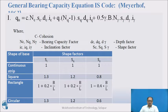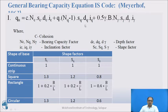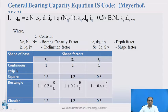This is the general bearing capacity equation of the IS code, where C is cohesion of soil; Nc, Nq, and Nγ are bearing capacity factors; Sc, Sq, and Sγ are shape factors; Dc, Dq, and Dγ are depth factors; and Ic, Iq, and Iγ are inclination factors. Meyerhof also provided different values of shape factors for different footing shapes.